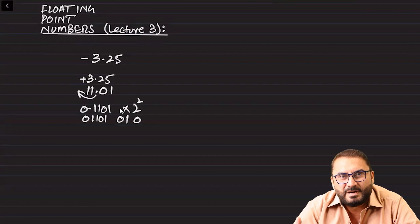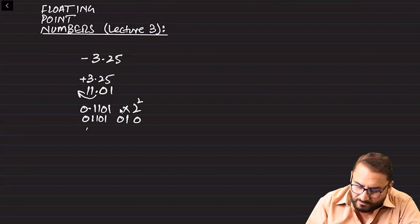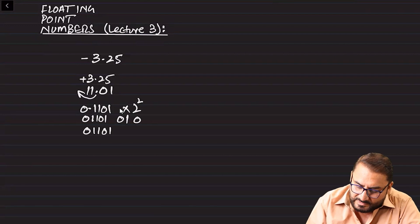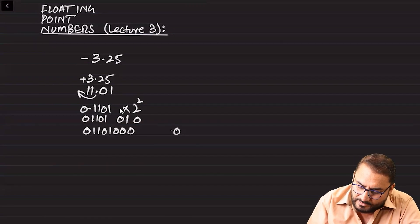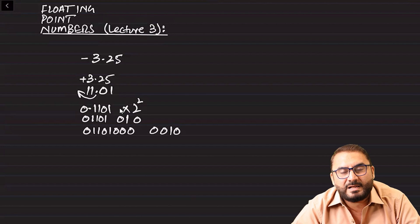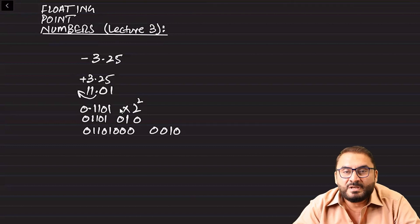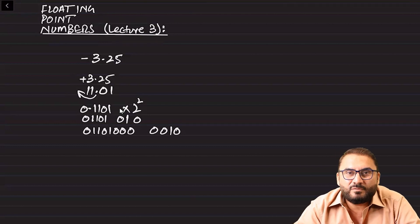We have to save it. Continuing with the previous lecture, let's say 8 bits mantissa and 4 bits exponent: one two three four five six seven eight, and one two three four. So this is your final answer for positive 3.25.